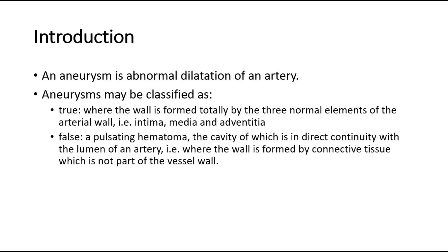Aneurysms may be classified as true or false. A true aneurysm is where the wall is formed totally by the three normal elements of the arterial wall: the intima, media, and adventitia.